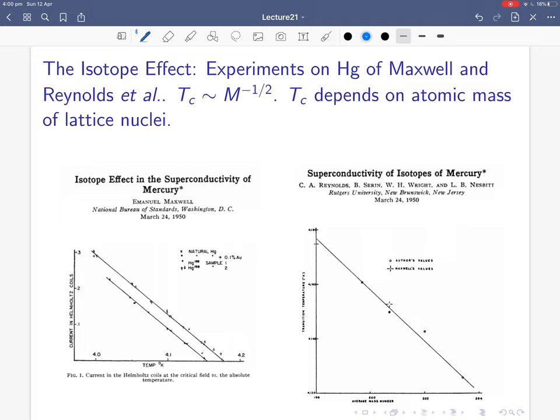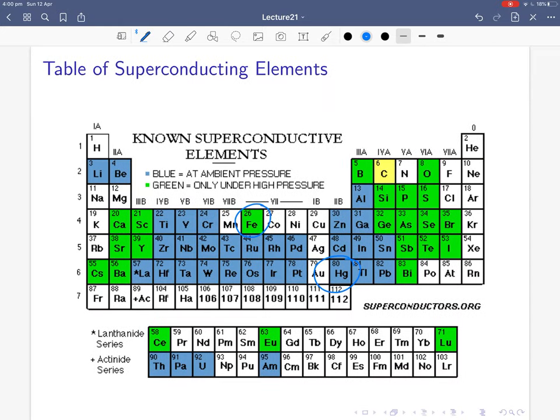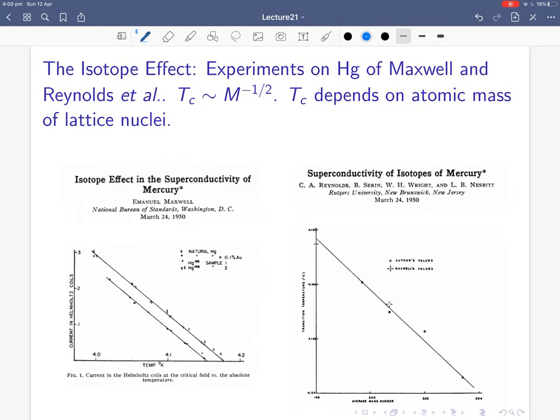After the experiment showing superconductivity exists, there was an attempt to explain it, but it took a long time. Onnes's experiment was in 1911. One hint, a very important hint, is the so-called isotope effect. If you take different isotopes and replace them in, say, mercury, and you measure the superconducting temperature, you find the critical temperature scales as the mass of the mercury isotope to the minus a half.